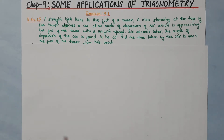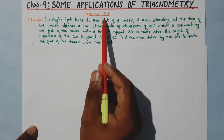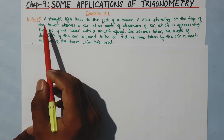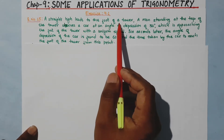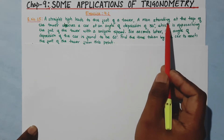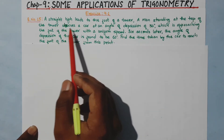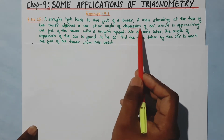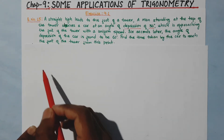Hello, my dear children. Welcome to our math class. In this class, we will solve question number 15 from exercise 9.1. A straight highway leads to the foot of a tower. A man standing at the top of the tower observes a car at an angle of depression of 30 degrees.